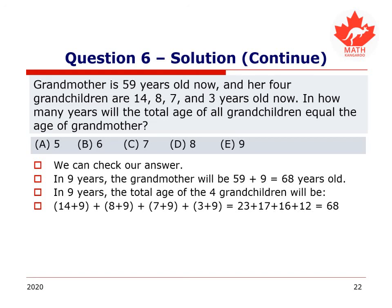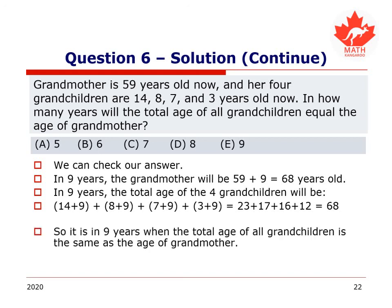All right, let's see. We have 14 plus 9 is 23, 8 plus 9 is 17, 7 plus 9 is 16, 3 plus 9 is 12. Altogether, indeed, that is 68. Good job us. It is in 9 years that the total age of all the grandchildren is the same as that of the grandmother. We did not make any arithmetic errors.